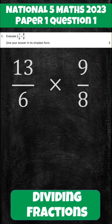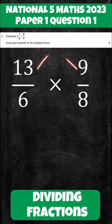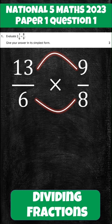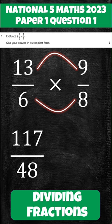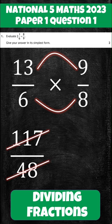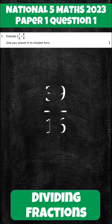So you times by the reciprocal — flip it upside down and times by the fraction. 13 times 9, 6 times 8, that gives us an answer of 117 over 48. Divide that by 3 on the top and bottom to simplify, and we get a final answer of 39 over 16.